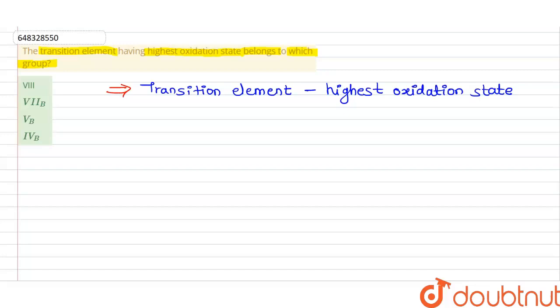First, consider a 4d series element — a second transition series element — that is ruthenium (Ru), having atomic number 44. Ruthenium has the highest oxidation state among transition elements. Let's see its electronic configuration.